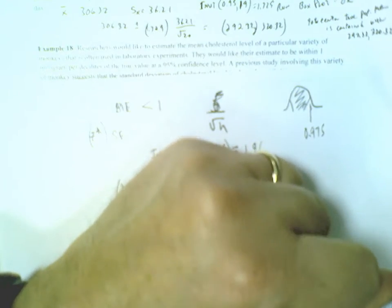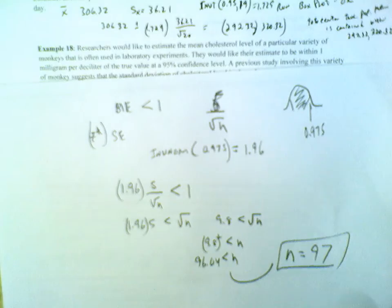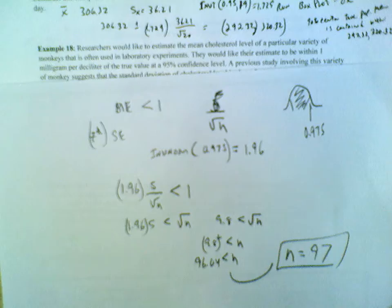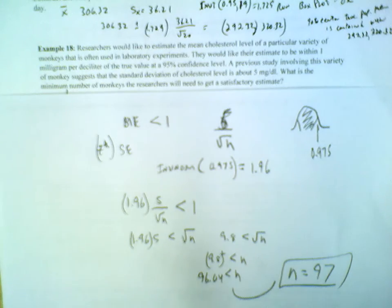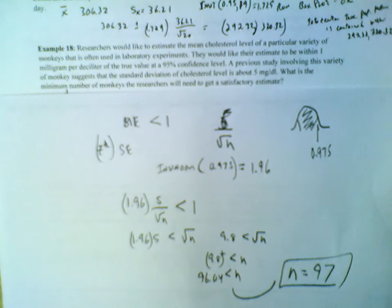I need n equals 97, working with a 95% confidence level and the fact that I'm going to work with the previous study value of 5 milligrams as our standard deviation. This is how this type of calculation works when we're developing a desired sample size for estimating a population mean.